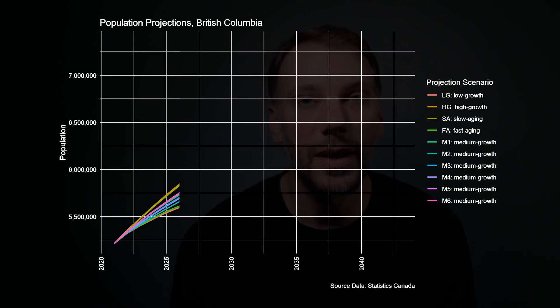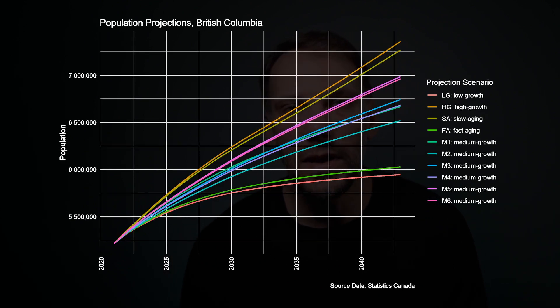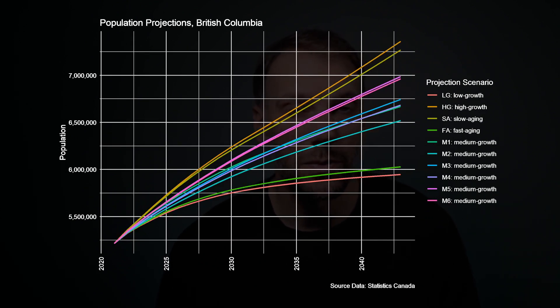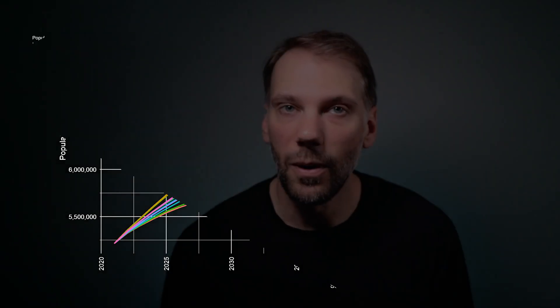StatCan just released their latest population projections for all provinces in Canada, featuring 10 growth scenarios for each province, ranging from low growth to high growth. Here's a plot of what these scenarios look like for BC over the next 20 years. One of the interesting things about this plot is that all of the scenarios are pointing upwards — there are no scenarios in which StatCan forecasts BC's population to decline in the future.